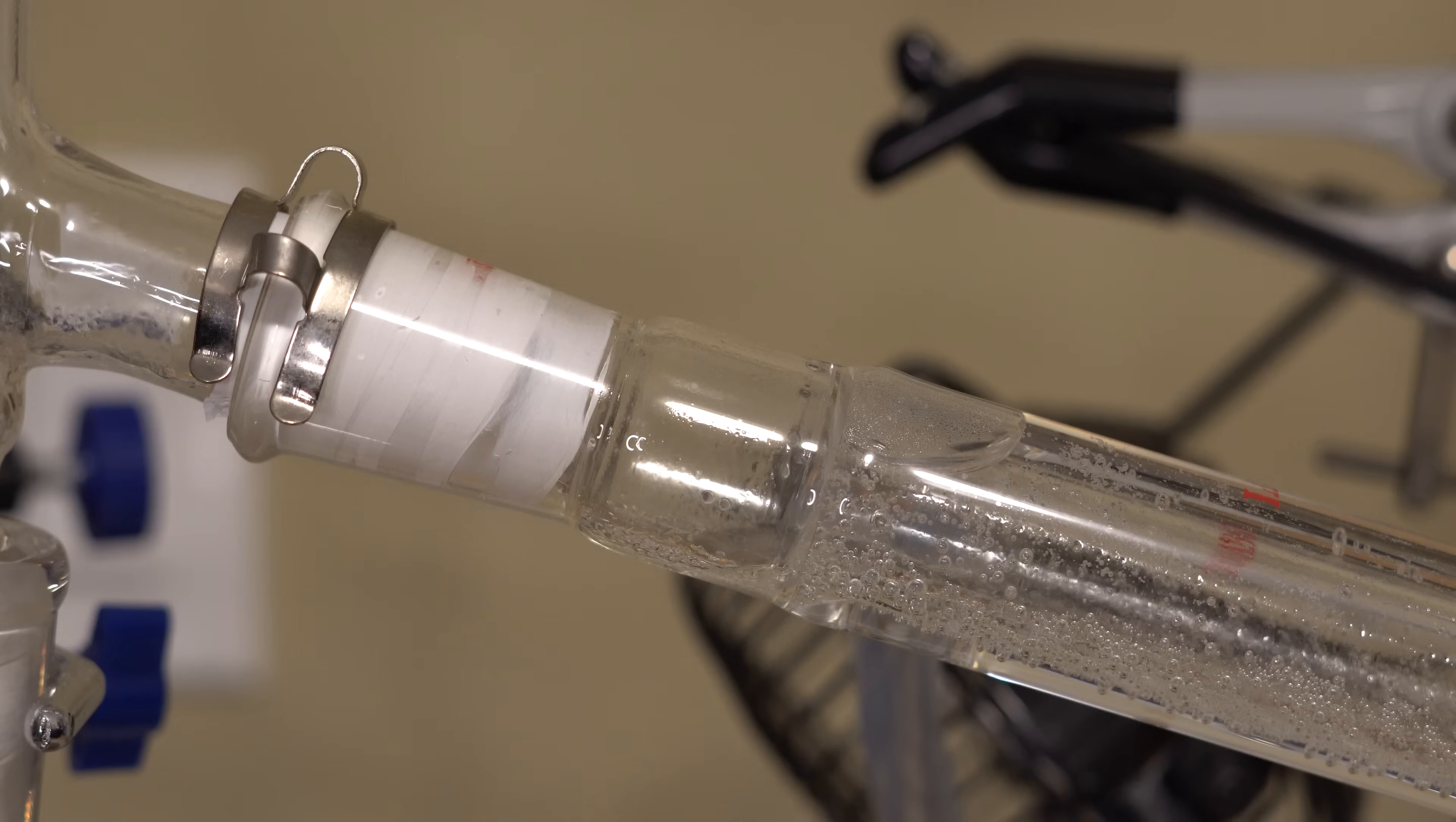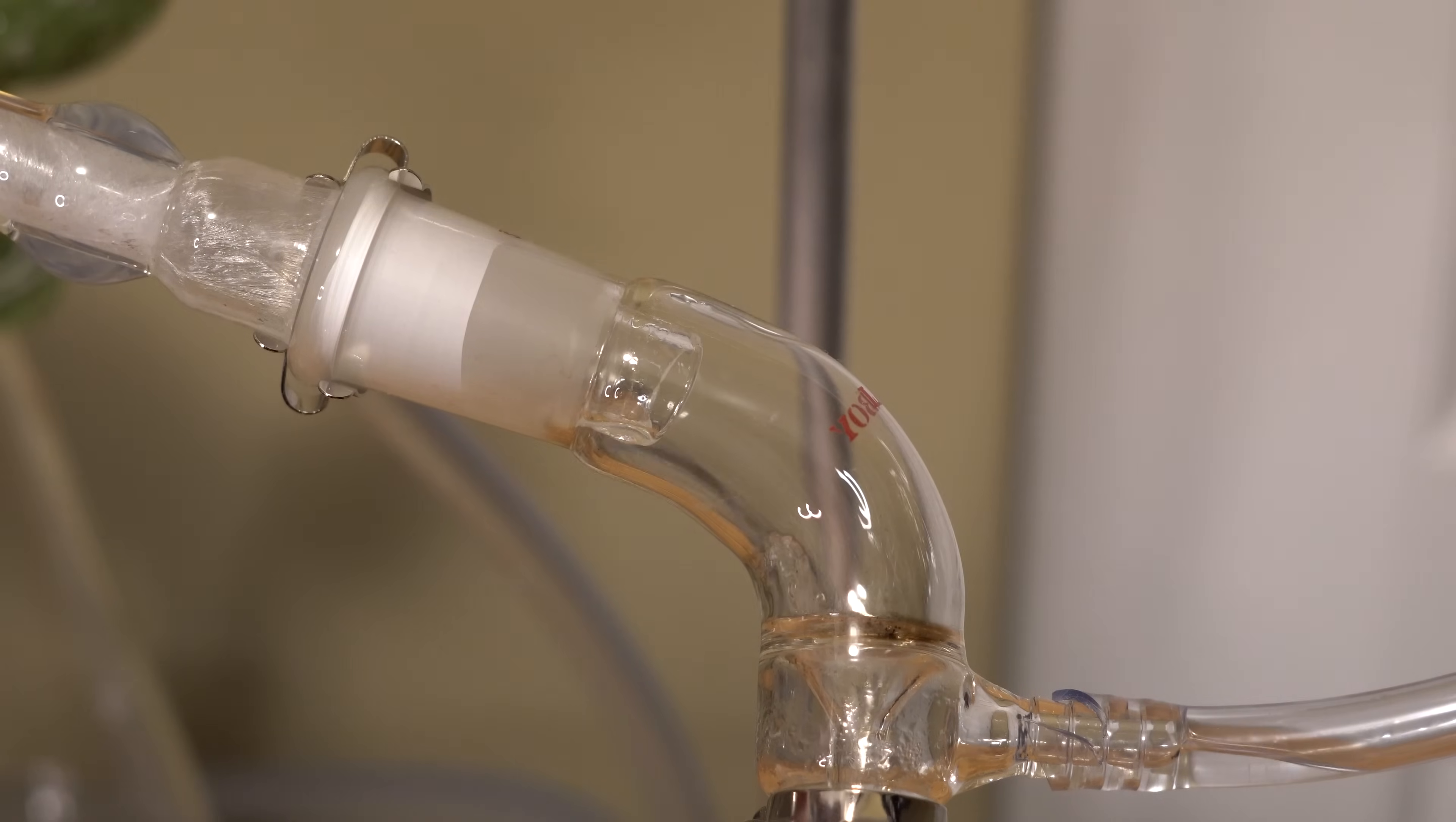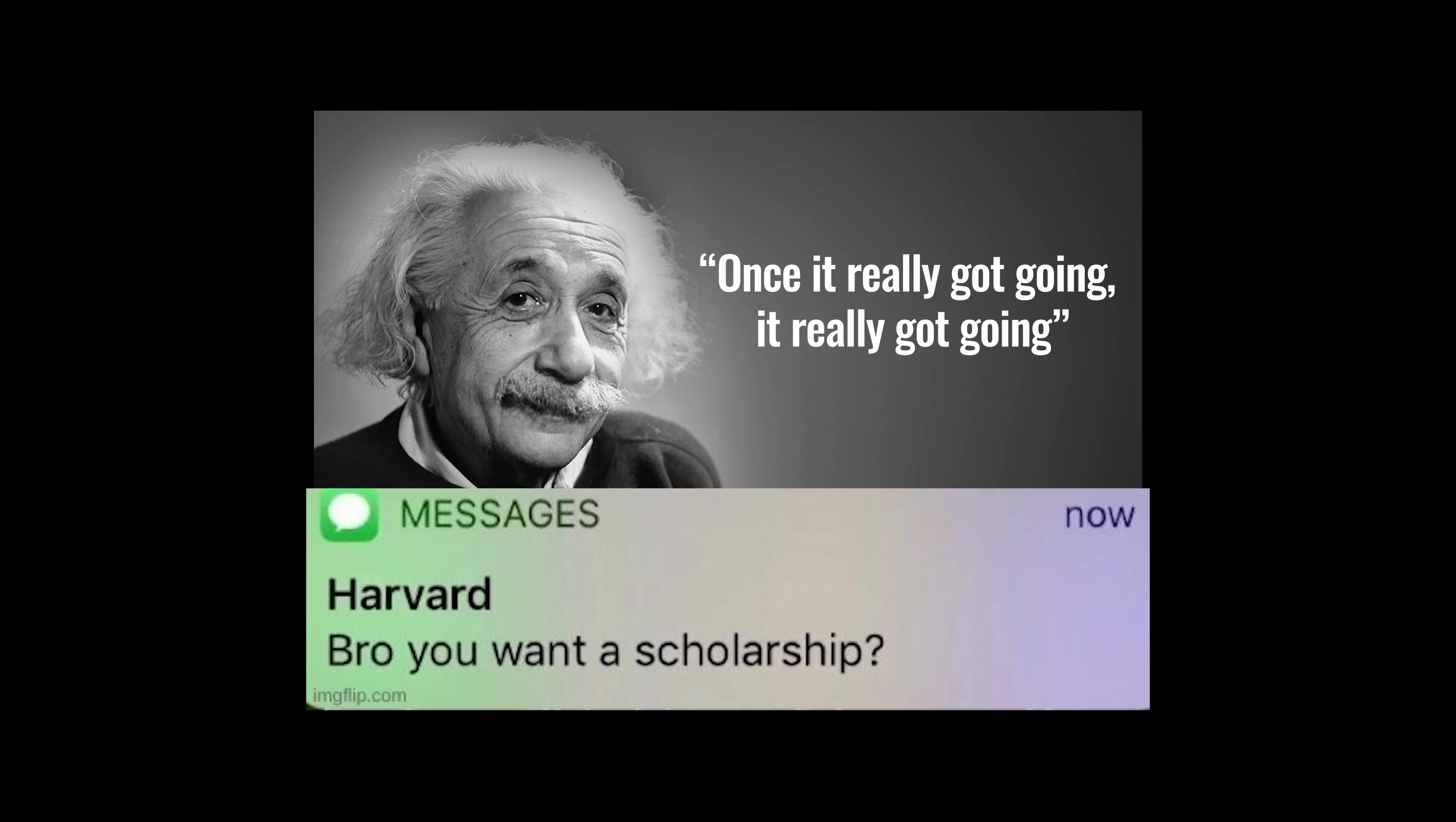As the decarboxylation progresses, we can see our beautiful droplets of phenyl coming over. Once it really got going, it really got going. The prophecy is true. Phenyl does like to clog up the condenser, as its melting point is a lot higher than other compounds.